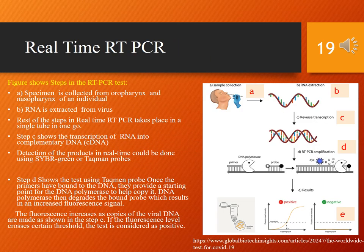As the figure shows, the following steps are found in the RT-PCR test. Step A: Specimen is collected from the oropharynx and nasopharynx of an individual. Step B: RNA is extracted from the virus. The remaining steps in real-time RT-PCR take place in a single tube in one run. Step C shows the transcription of RNA into complementary DNA.